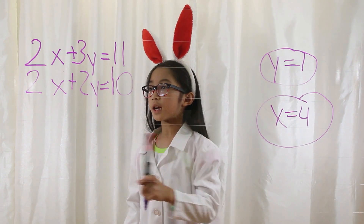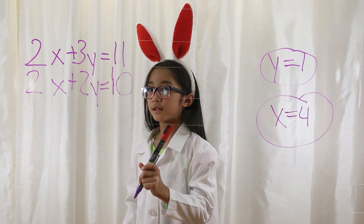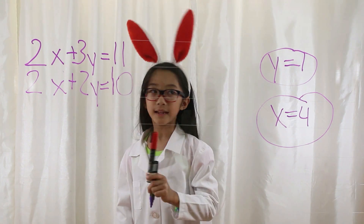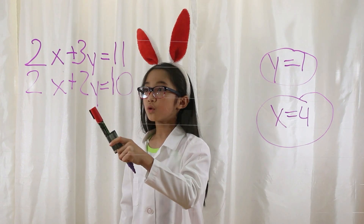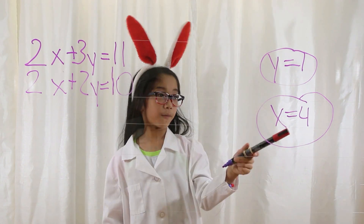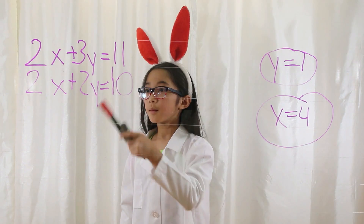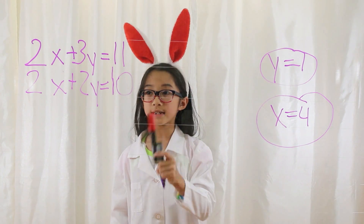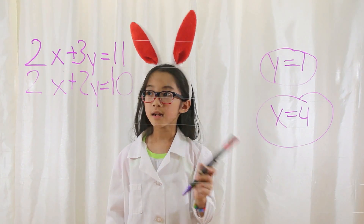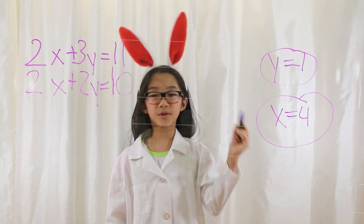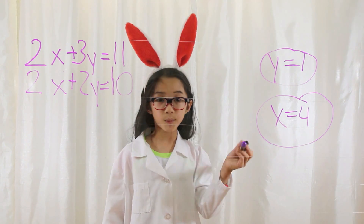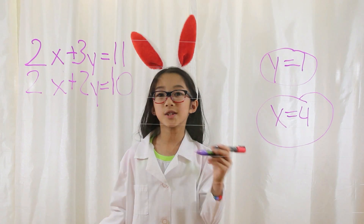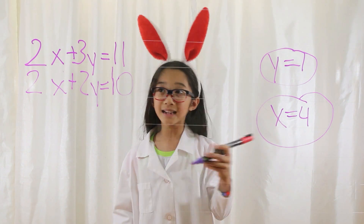But note you have to check on both equations. So just to make sure, let's plug it back in. 2(4) plus 2(1) equals 10. 2 times 4 is 8. 2 times 1 is 2. 8 plus 2 equals 10. Check.